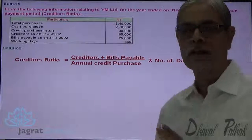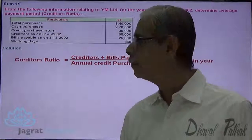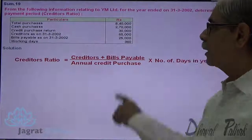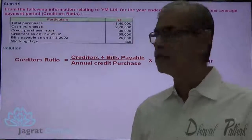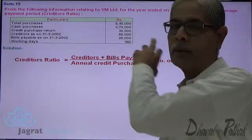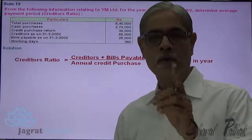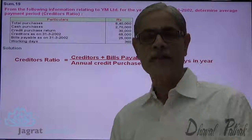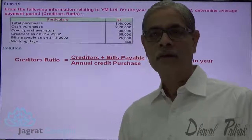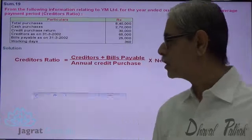Now let me first work out the annual credit purchase. I have been given the total purchase, cash purchase, and purchase return. Cash purchase and purchase return are deducted from total purchase to find out the annual credit purchase.